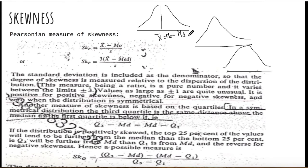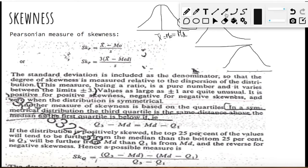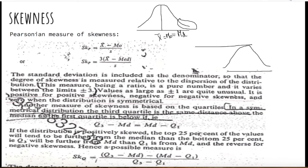Suppose on the positive side, which is the side where x values increase, you add more data points that are towards the greater values of x. Then your data is skewed and will have a tail towards the positive side. This kind of skewness is called positive skewness.